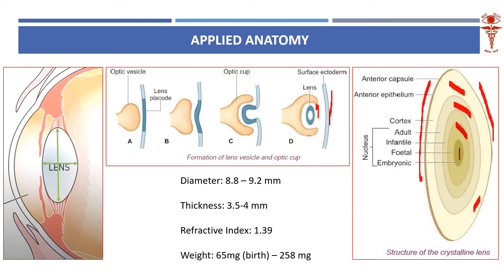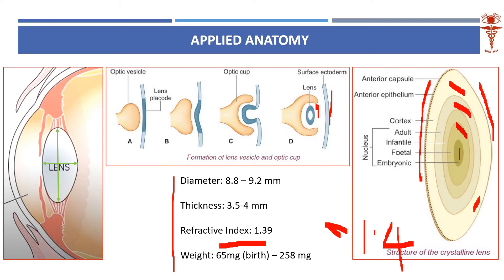Regarding the dimensions of the lens and refractive index: when we considered the refractive index of the cornea, we said 1.376. The lens overall has a refractive index of 1.39, but if you take the nucleus separately, it is roughly around 1.4. So remember: 1.376 for cornea, 1.39 for the lens in total, and 1.4 for the nucleus — these are very important points.